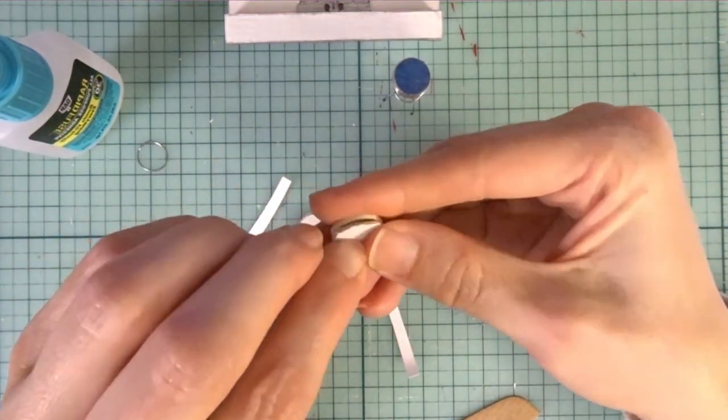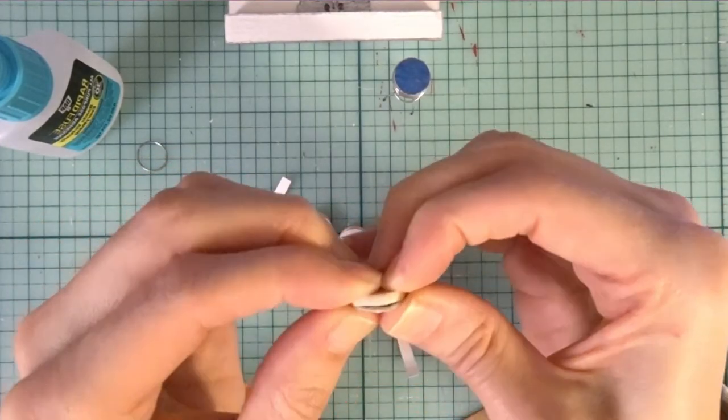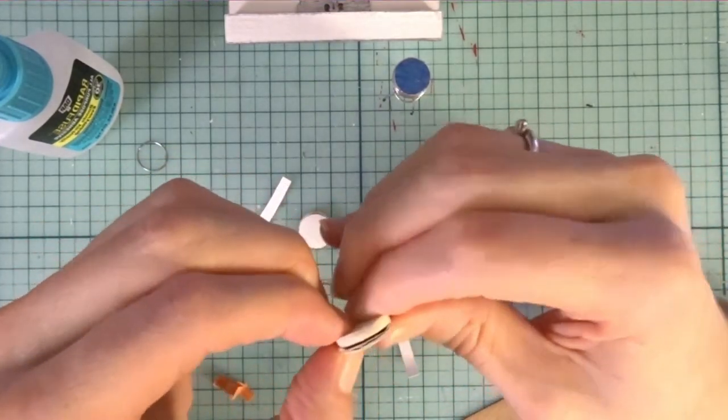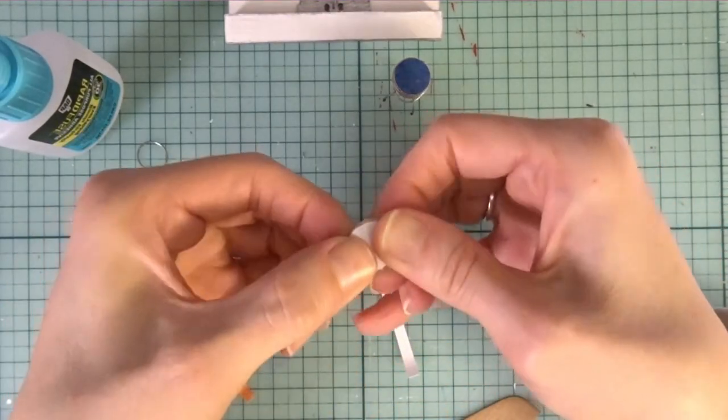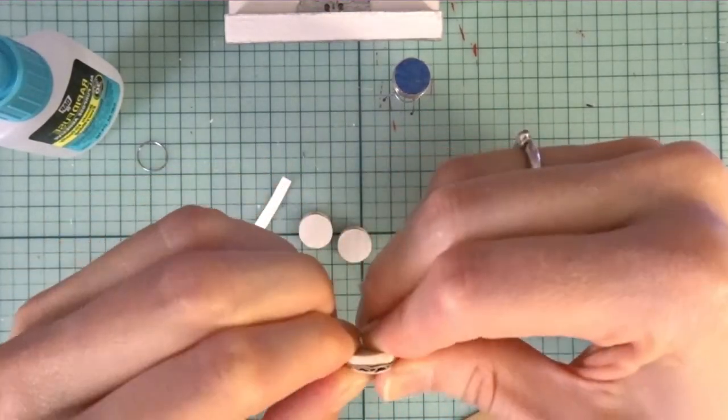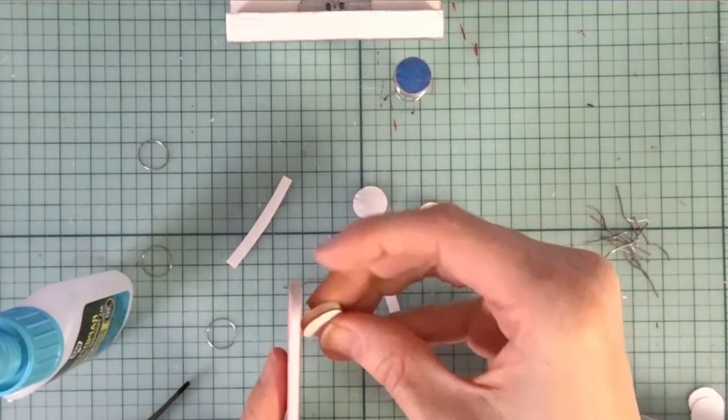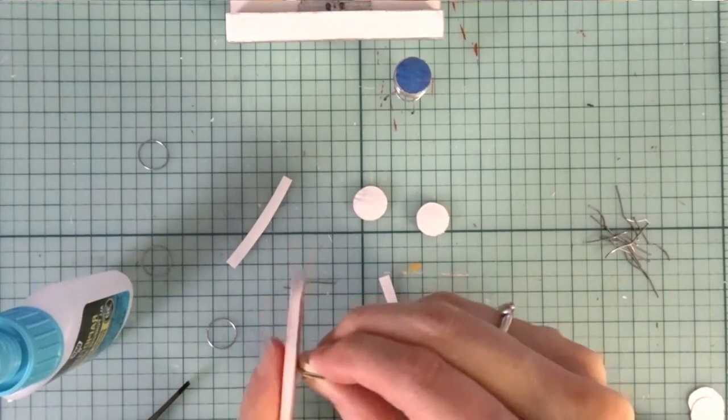Then I just glue it down like so and work it around. After I'm done with that, I sand it down. You can see all the legs to the right, all 16 of them.